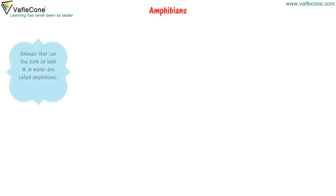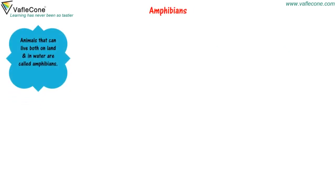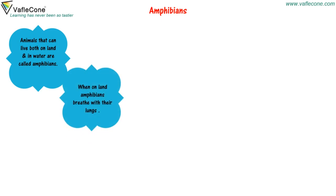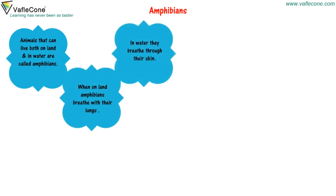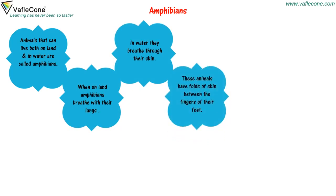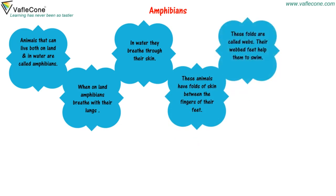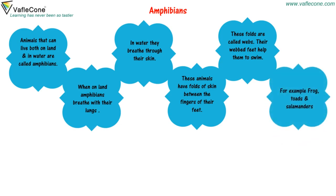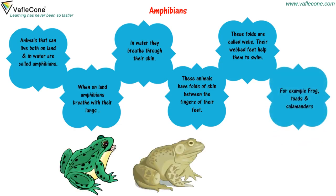Amphibians: Animals that can live both on land and in water are called amphibians. When on land, amphibians breathe with their lungs. In water, they breathe through their skin. These animals have folds of skin between the fingers of their feet called webs. Their webbed feet help them to swim. For example, frog, toads, and salamanders.